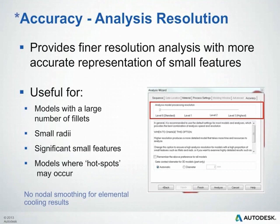Within the Autodesk Simulation Moldflow Advisor tool, the part is meshed prior to running an analysis, and this is hands-off for the most part. However, in the analysis wizard there is an Accuracy tab with a slider bar that allows you to adjust the mesh density. This can be very useful for models with a large number of fillets, small radii, significant small features, or models where hotspots may occur. Keep in mind that fillets and radii are not necessary in a flow analysis in most cases, and increasing the accuracy level will increase your analysis time.